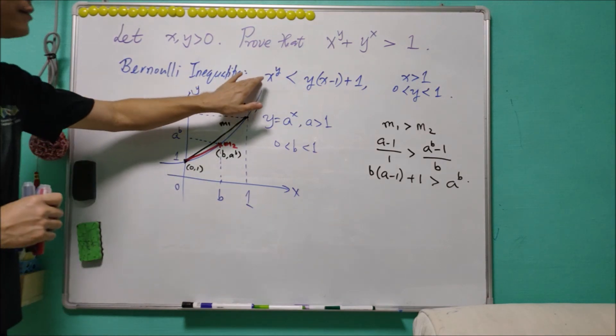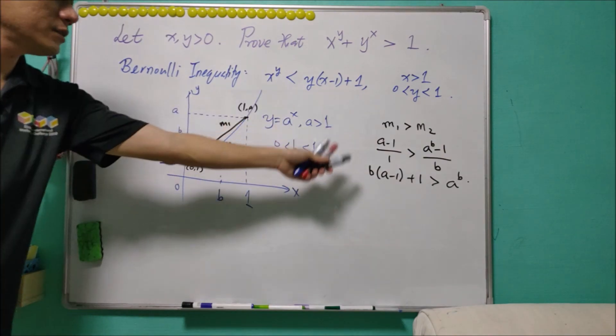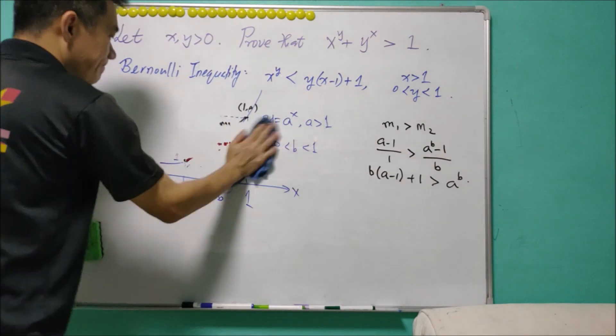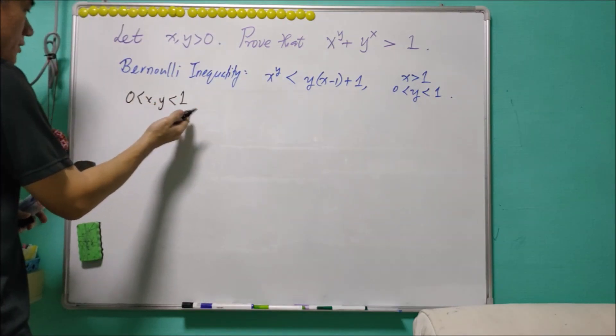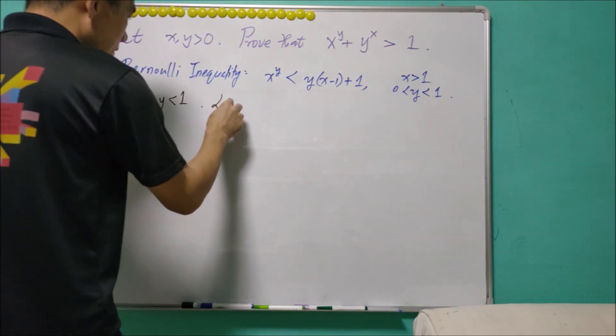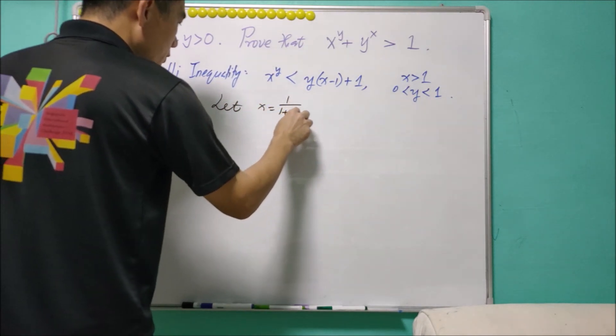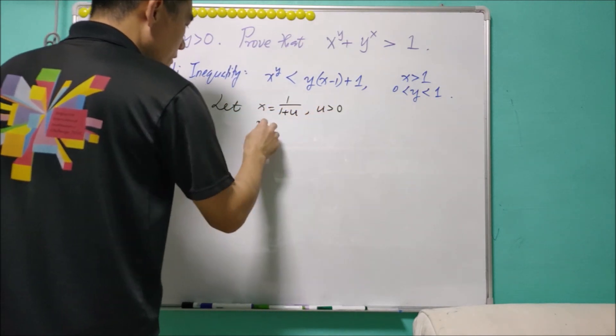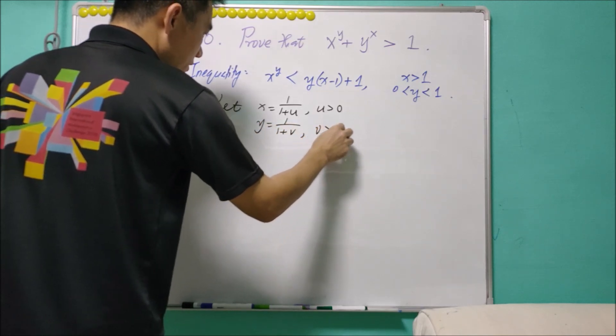And we are going to use this for this question. So I'm going to erase this to get some space. See, we only consider x, y to be in between 0 and 1. We will let x to be 1 over (1 plus u), where u is positive. And y equals 1 over (1 plus v). And v is positive.